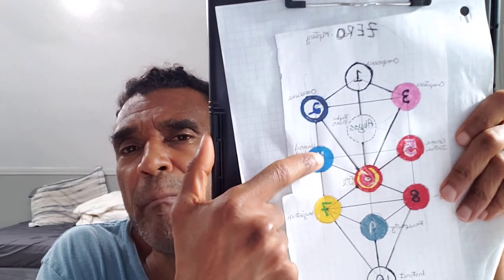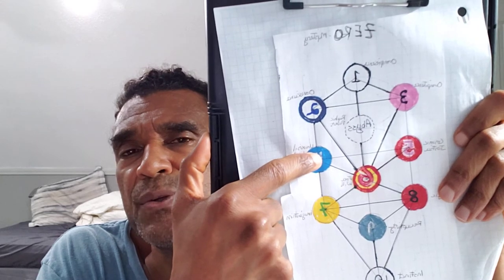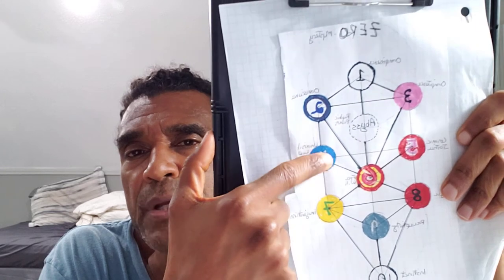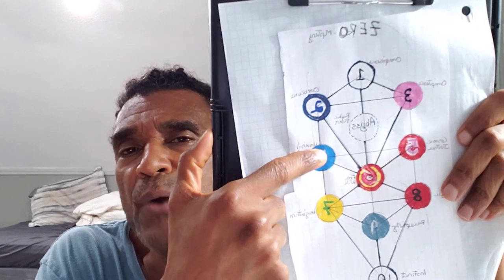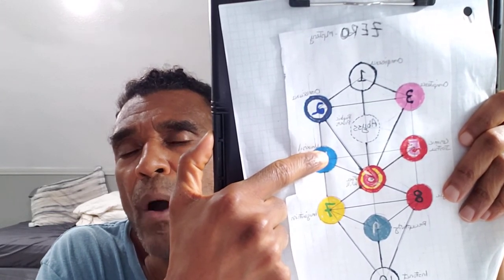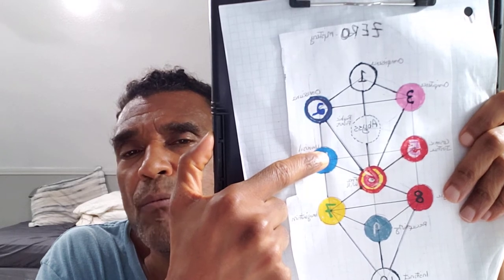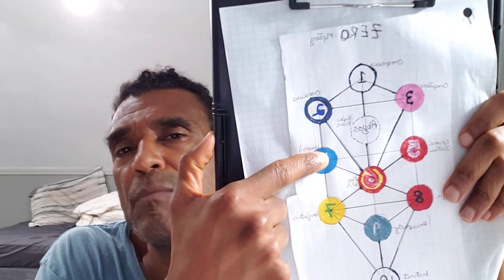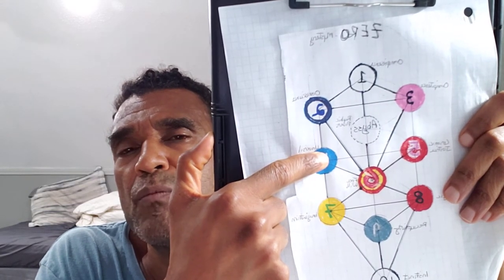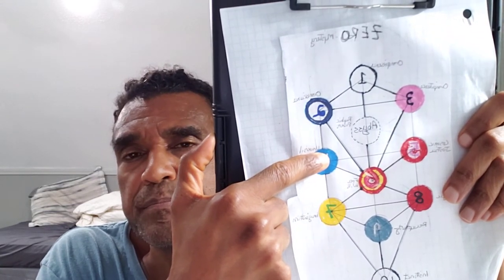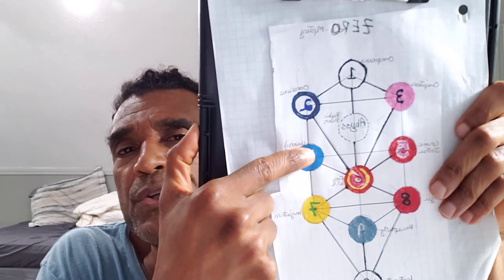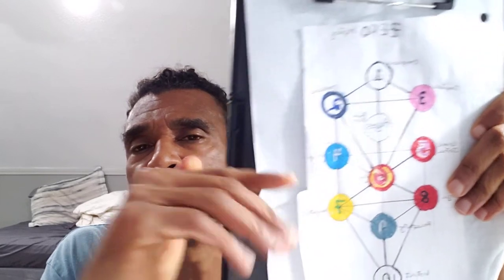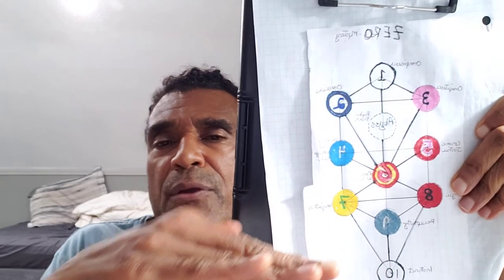So these have all kind of stood the test of time and have been corrected over time. So I feel like the best approach here is to try to take in as many different cosmologies as you can and then compare them, contrast them, and then use your intuition. Go inside and try to figure out, you know, what makes the most sense to me. What harmonizes with my own experience?